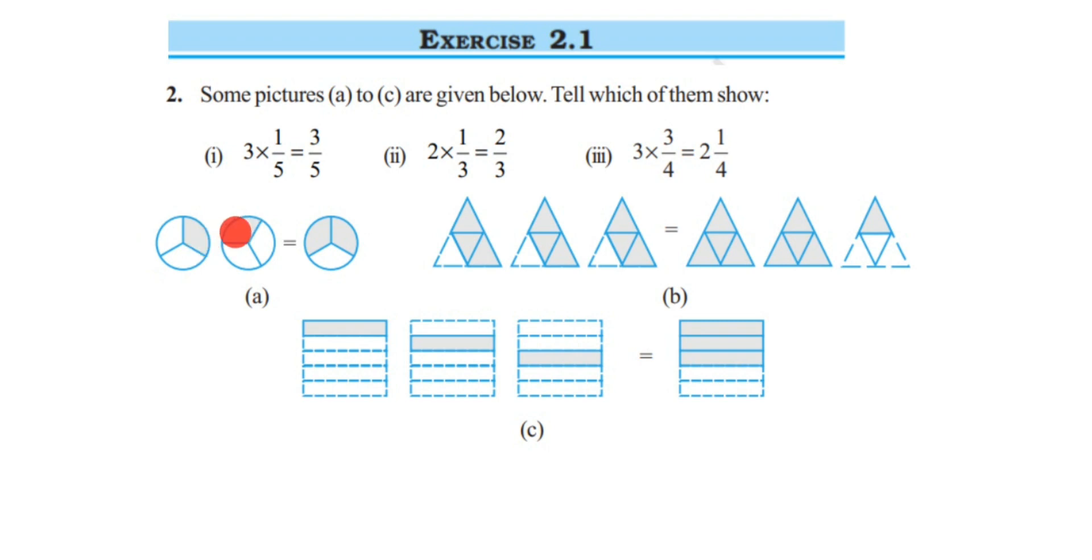If you represent this in fraction form, the fraction will become 1/3. Like that, we have two circles, so the total fraction will become 2 × 1/3, and this is the total figure. So this is equal to the second one. You can see the second one represents the circle.